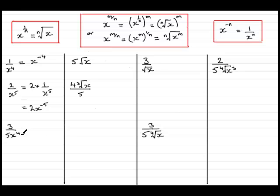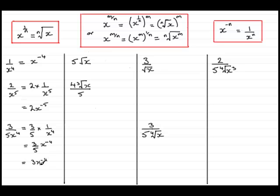Now in this example there's a number in the denominator — quite often I see mistakes with this kind of thing. It says 3 all over 5x to the 4, but we can think of this as 3 fifths multiplied by 1 over x to the power 4. By our rule that's x to the minus 4, so we get 3 fifths multiplied by x to the minus 4, which is 3 fifths x to the minus 4. This can also be written as 3x to the minus 4 all over 5 — either way they're exactly the same. In practice you should be able to go straight from the original to this result.